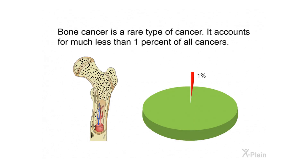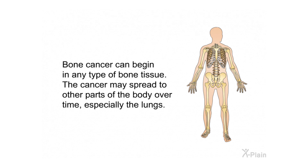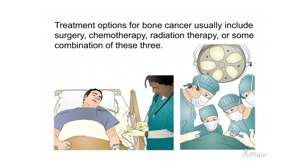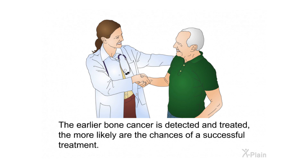In summary, bone cancer is a rare type of cancer — it accounts for much less than one percent of all cancers. Bone cancer can begin in any type of bone tissue and may spread to other parts of the body over time, especially the lungs. Treatment options usually include surgery, chemotherapy, radiation therapy, or some combination of these. The earlier bone cancer is detected and treated, the more likely are the chances of a successful treatment.